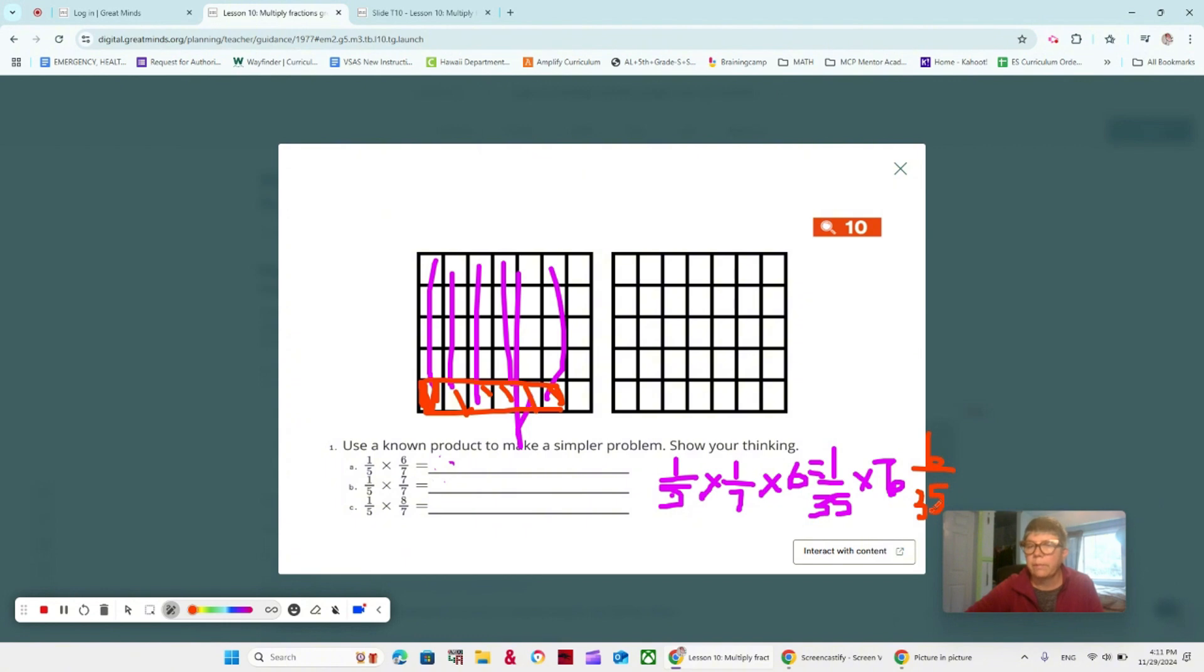That would be our answer to one A, six thirty fifths. We multiplied a fraction with a lesser value than one by a fraction less than one. Both of these are less than one, and our answer is less than one. Do you see that? Just kind of clarifying.